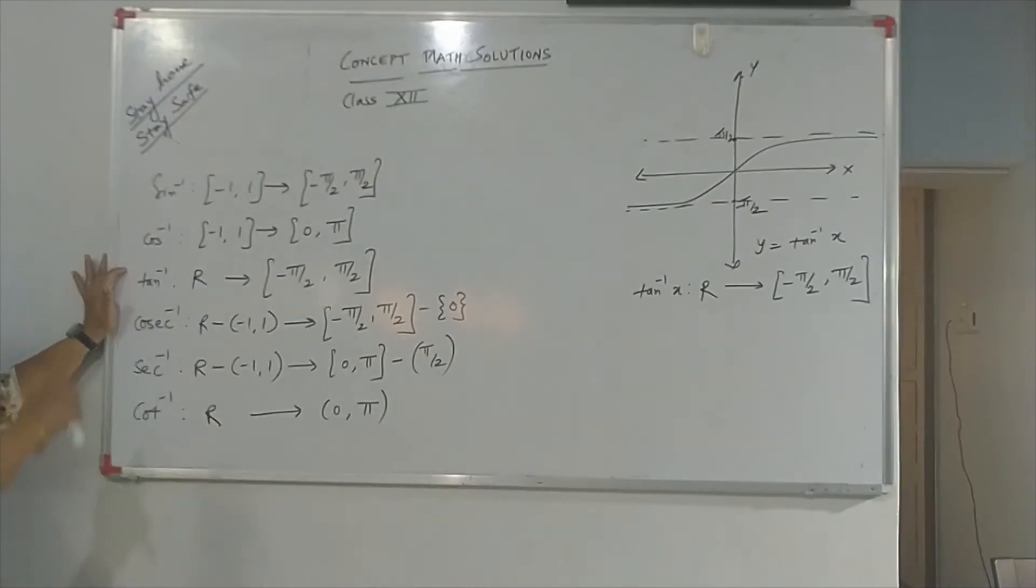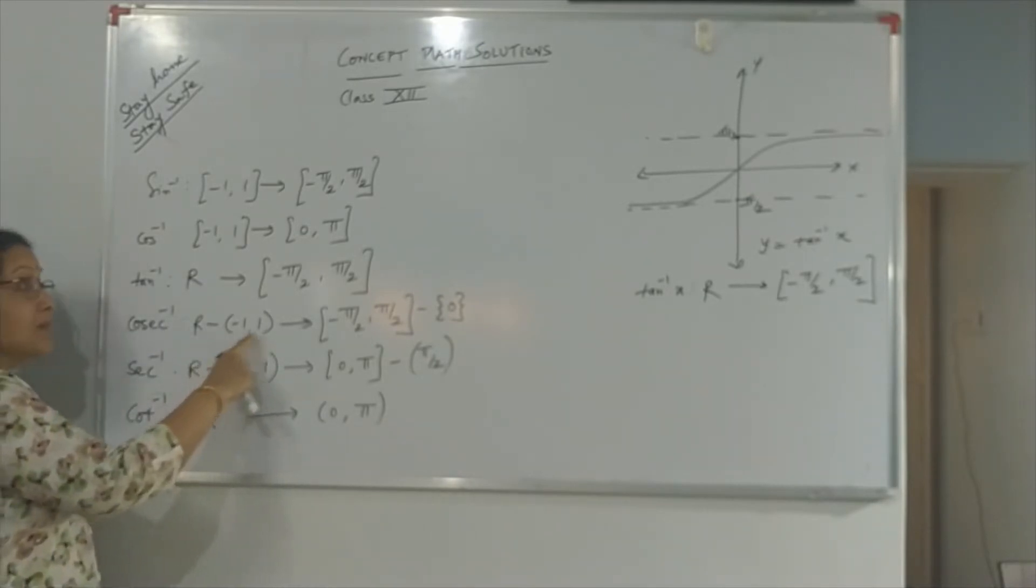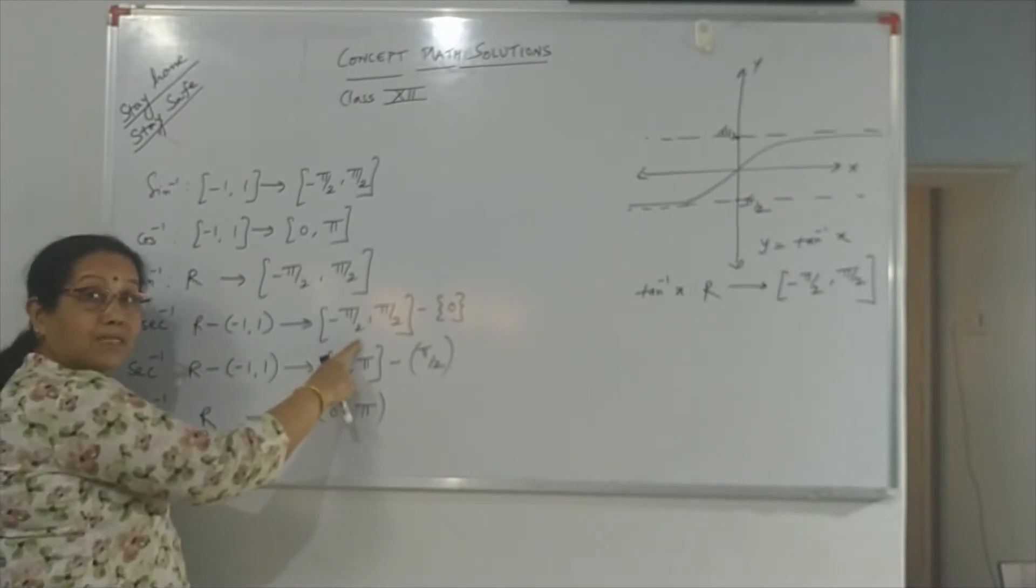Tan inverse, we discussed just now. Cosec inverse, also we discussed in the earlier class. R minus [-1, 1] to minus π by 2 to π by 2 minus 0.